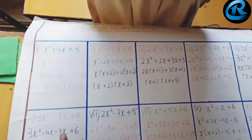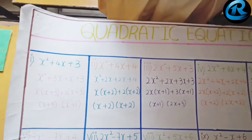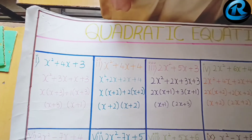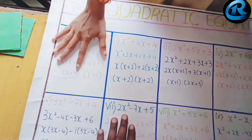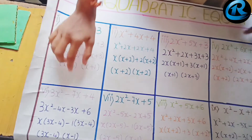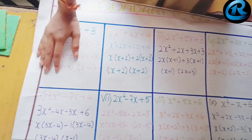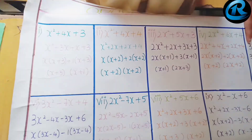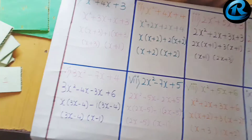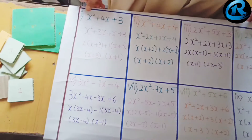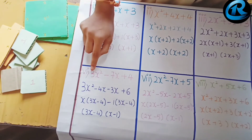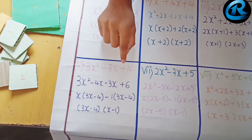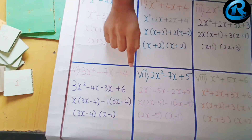Up to now we have seen the x coefficient values in positive. So now let us take some more examples with negative coefficients. Let us go for the example: 3x² − 7x + 4.